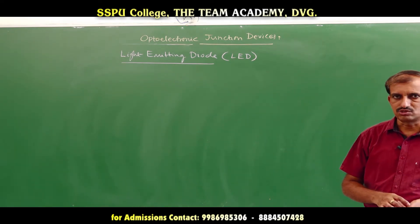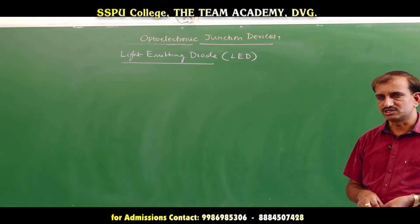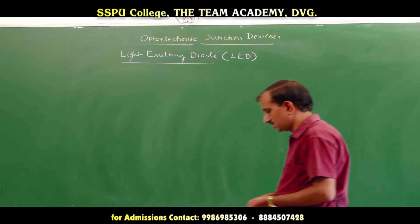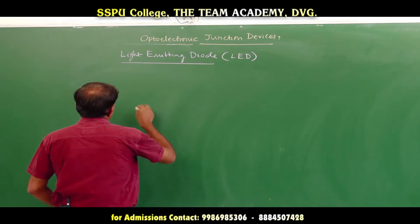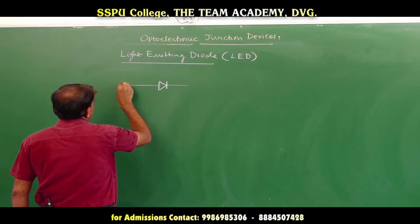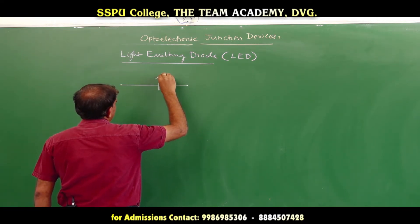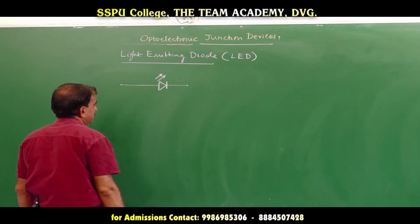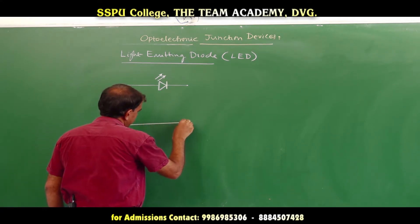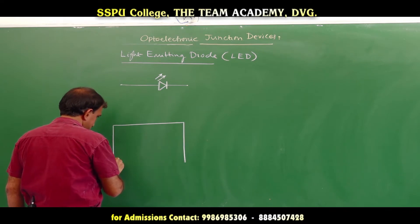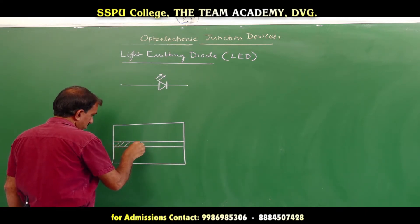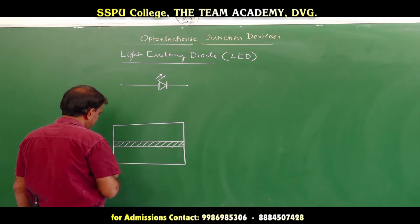The circuit symbol of an LED shows a PN junction diode. LED is a junction diode which converts electric energy into light energy. It is a PN junction diode with two types of semiconducting materials: one is P-type and another is N-type, with a depletion region in between. There are two metallic contacts on P-type and N-type.